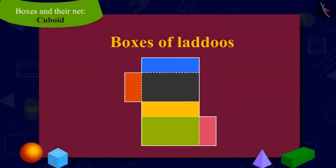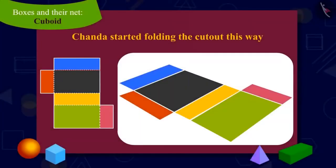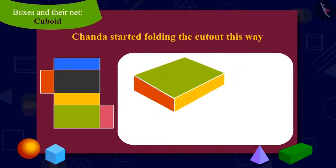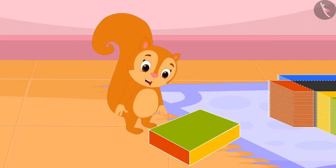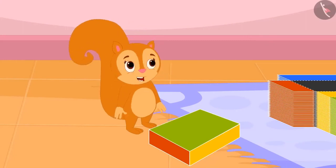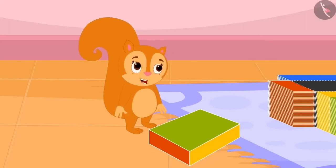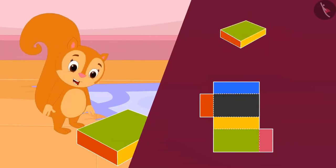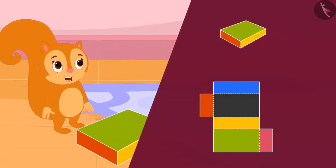Appu showed Chanda a cardboard cutout. He asked Chanda to fold the cutout on the lines with dots on it. Chanda began to fold the cutout, and she couldn't believe her eyes. The laddus box was ready by folding the cutout on those dotted lines.